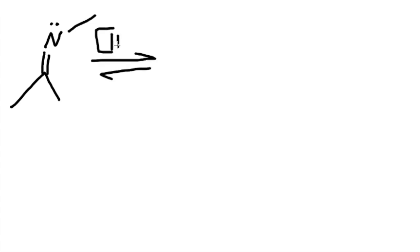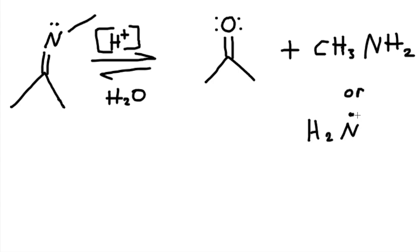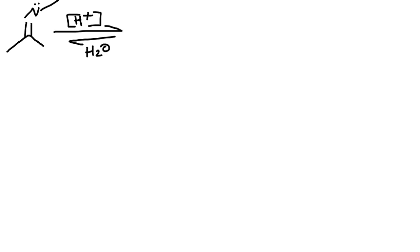Since this is a reversible reaction, let's start backwards from the product. We have the imine reacting in acidic conditions with water — water makes it go in reverse. From the product, we know we're going to need a ketone, so we draw the ketone. We also draw the other half: the primary amine, CH₃NH₂, which is what we originally started with. Now let's do the mechanism for this reversal reaction.